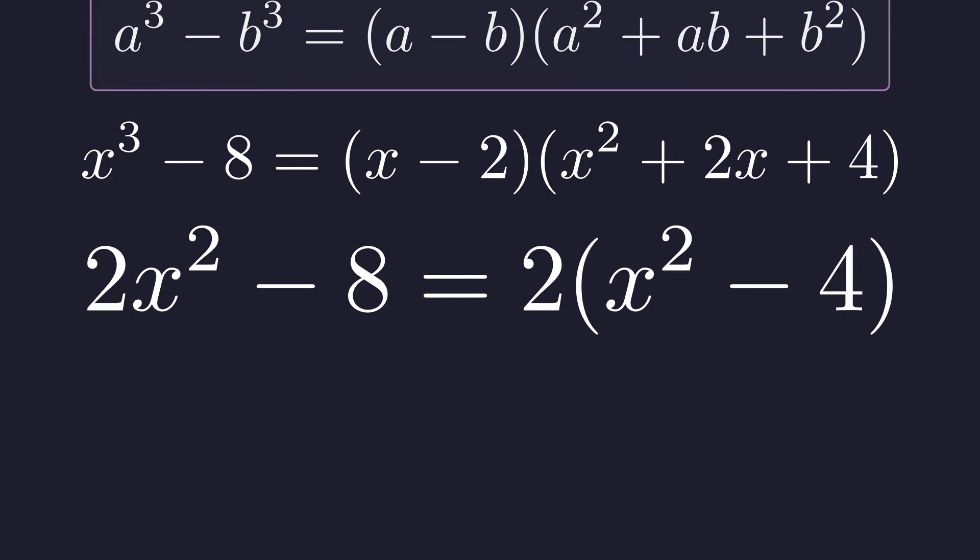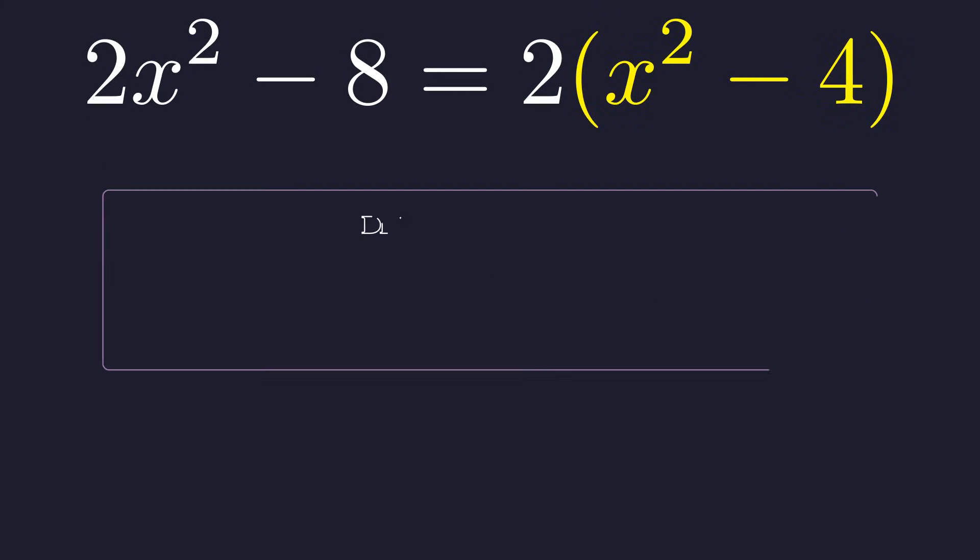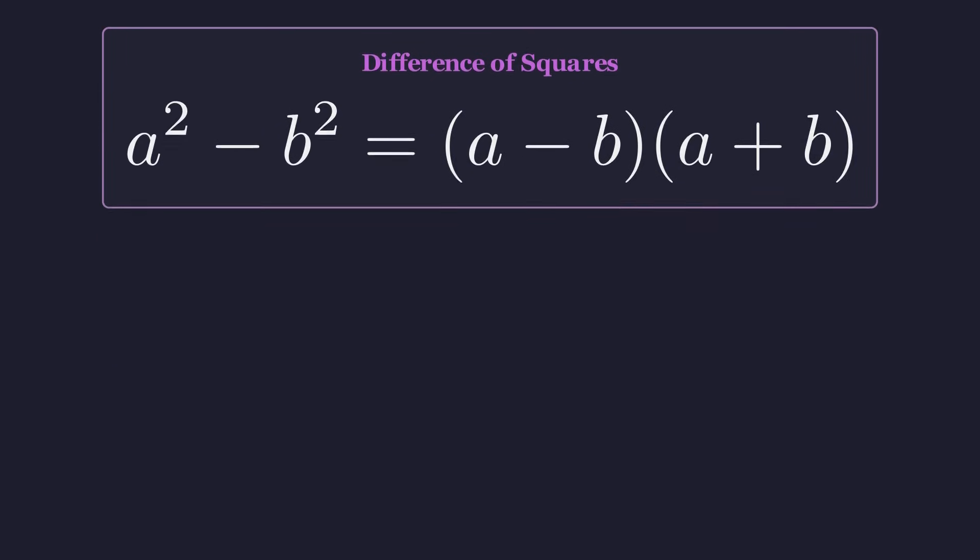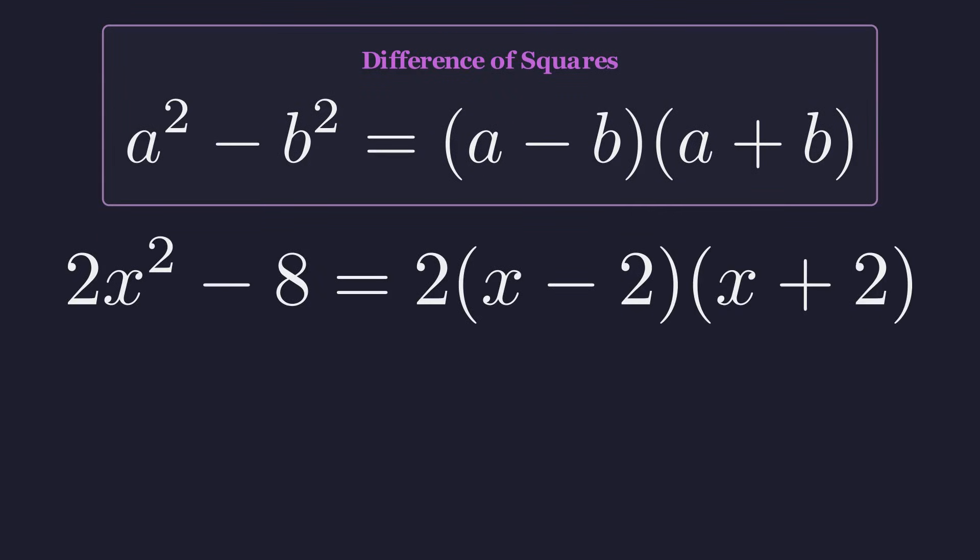First, we'll factor out the two. And look at that. Inside the parentheses, we've got a difference of squares. The identity is a squared minus b squared equals the quantity a minus b times the quantity a plus b. With a as x and b as 2, this gives us the fully factored second term.